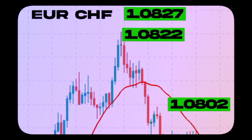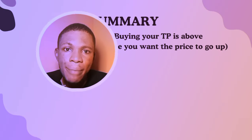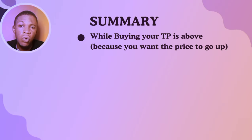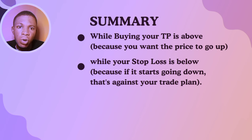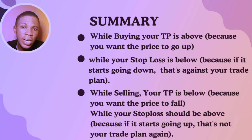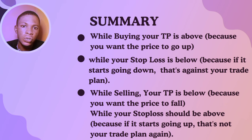Pips calculation is basically straightforward if you learn how to calculate it — it's not rocket science, just addition and subtraction. Just note whether you are buying or selling. In summary: while buying, your TP is above because you want the price to go up, while your stop loss is below because if it starts going down, that's against your trade plan. In reverse, while selling, your TP is below because you want the price to fall, while your stop loss should be above because if it starts going up, that's not your trade plan.